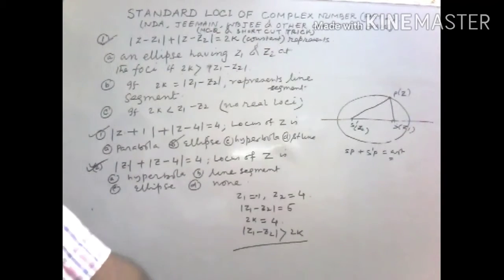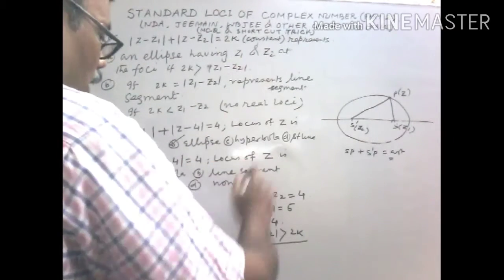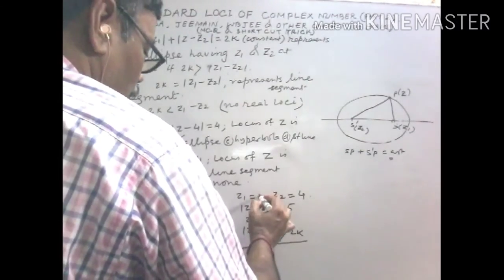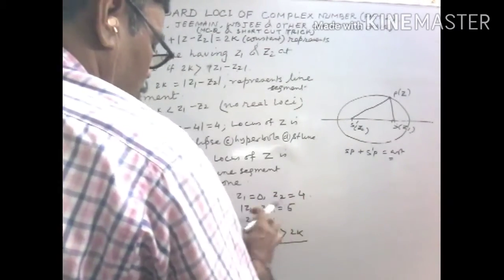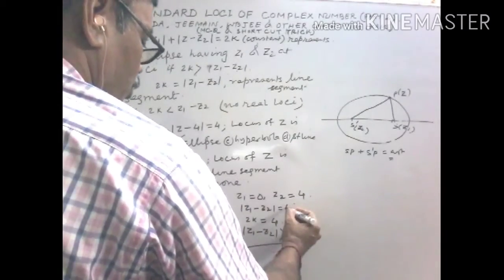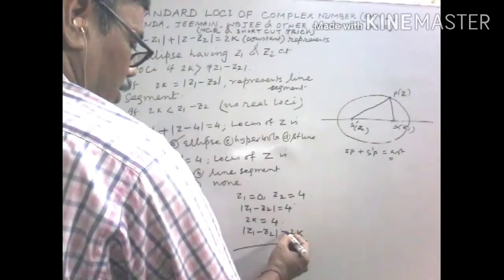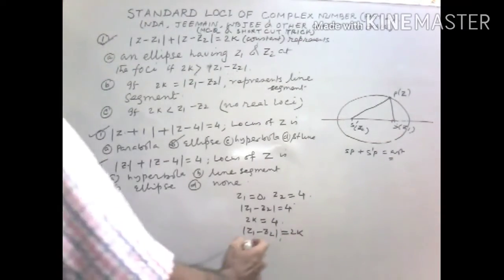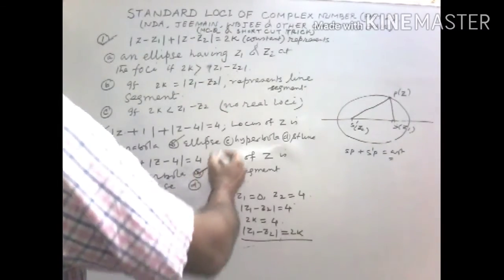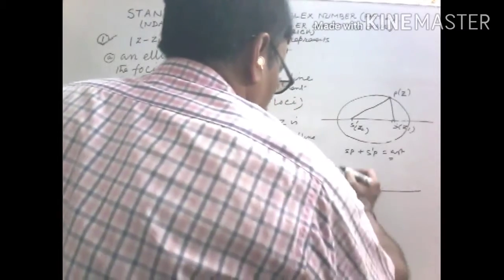Application number 2: |Z| + |Z - 4| = 4. Here Z1 = 0 and Z2 = 4, so |Z1 - Z2| = 4. And 2k = 4, so 2k equals |Z1 - Z2|. Therefore it represents a line segment.